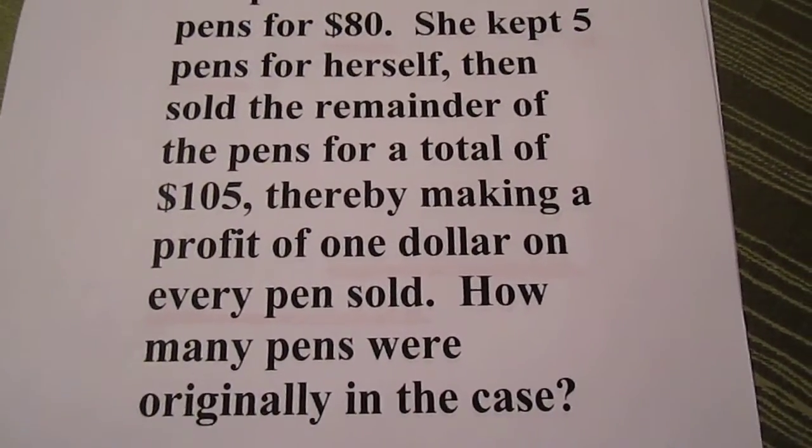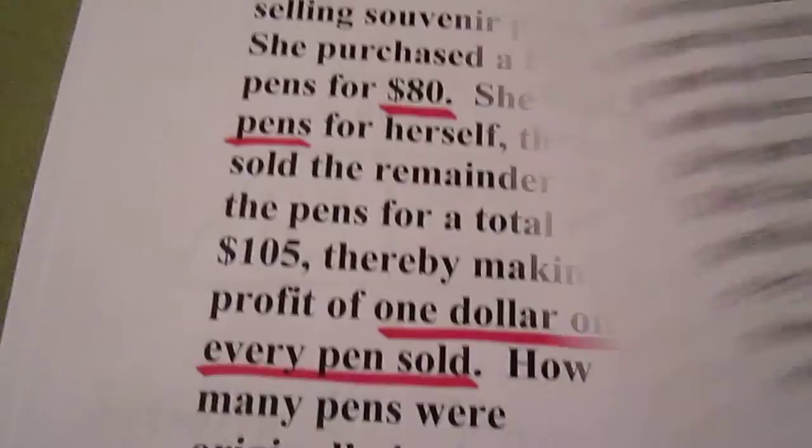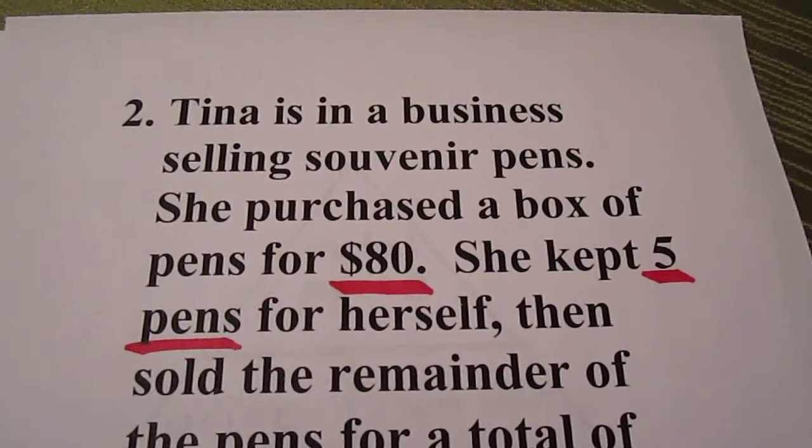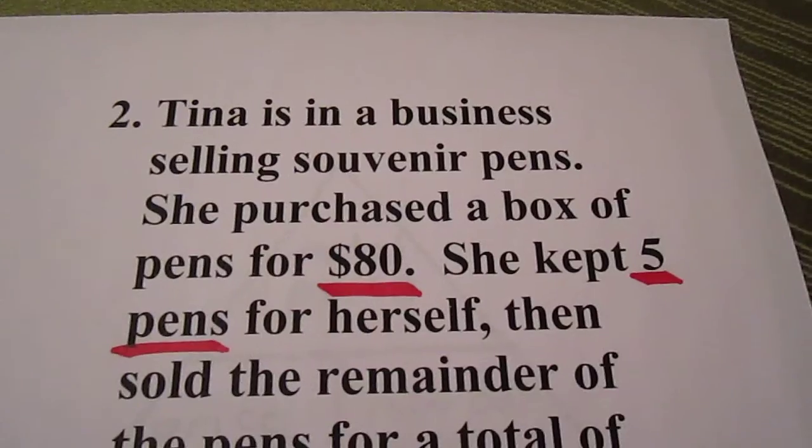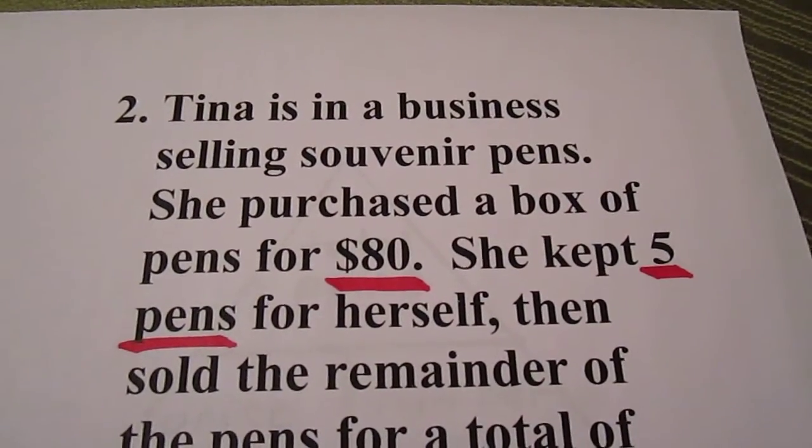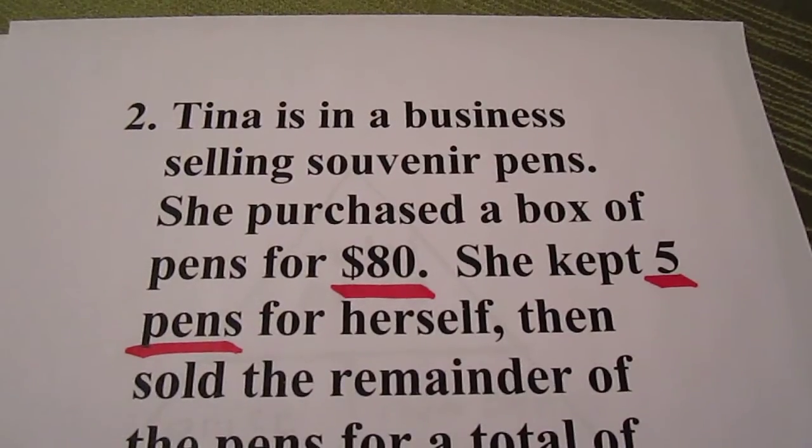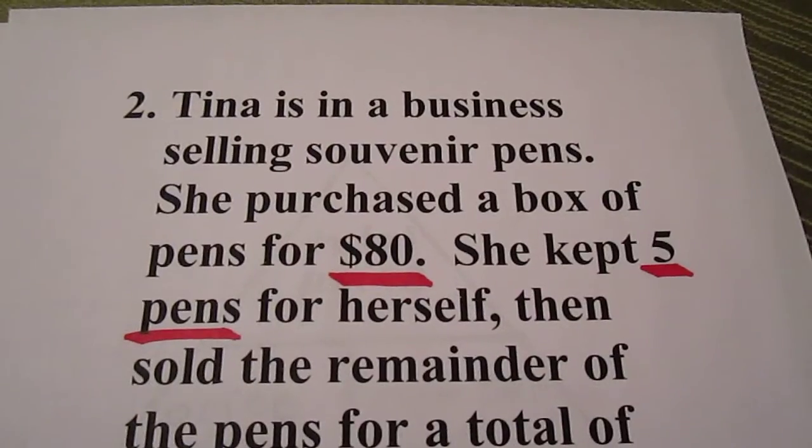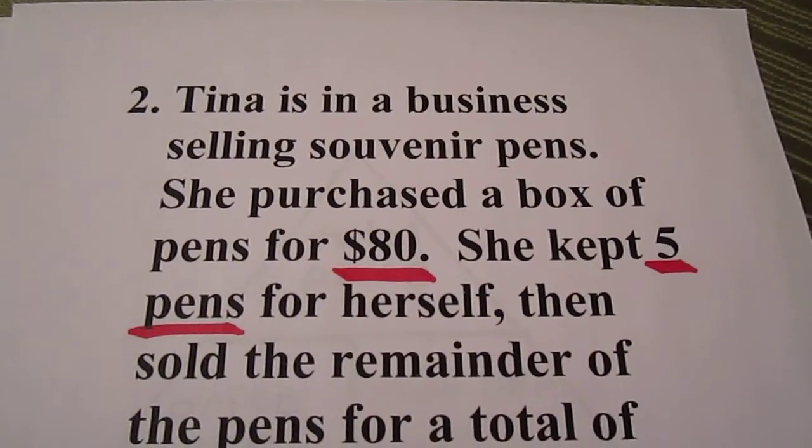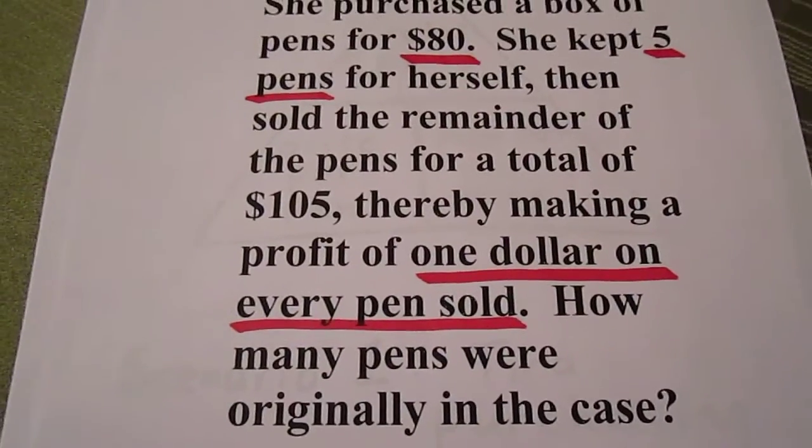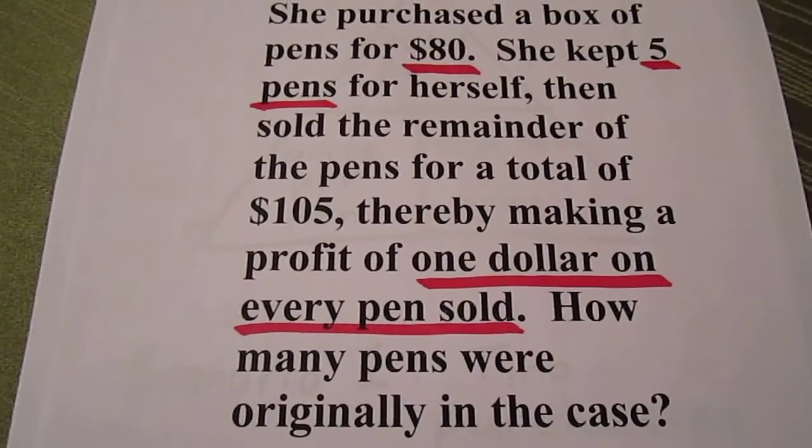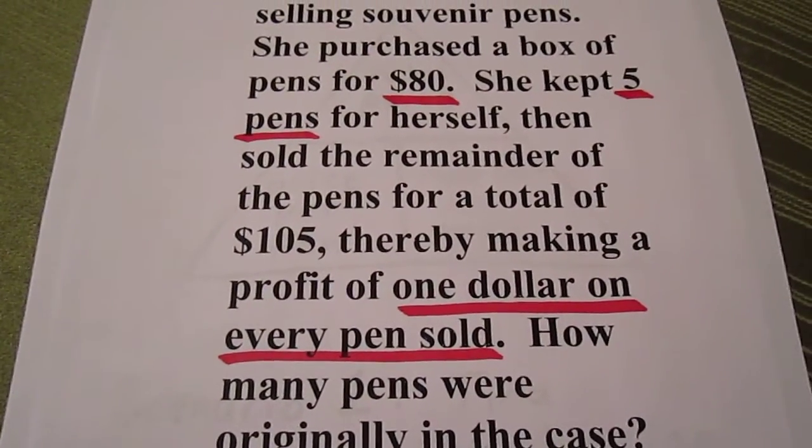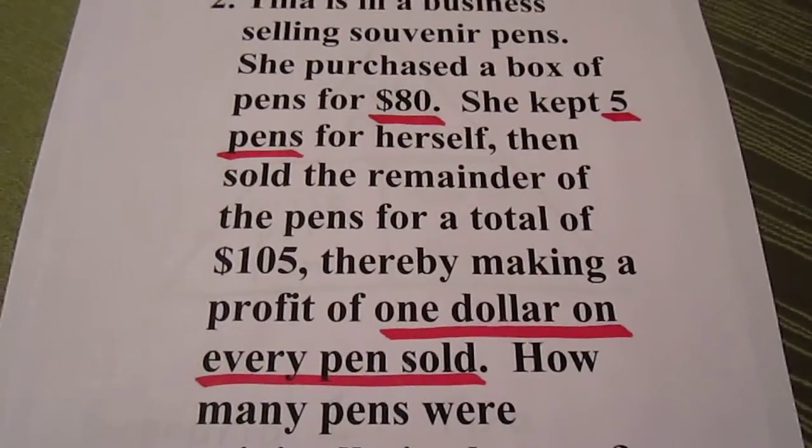We want to know how many pens were originally in the case. First thing we do is try to figure out what this question is asking us about. We see we are talking about $80 for a box of pens, so one of our variables will be total price. We're also talking about her keeping five pens for herself and selling the remainder of the pens, so one of the other variables is going to be the number of pens. Finally, it talks about making a profit of $1 on every pen sold, so one of the other variables will be measured in terms of price per pen.